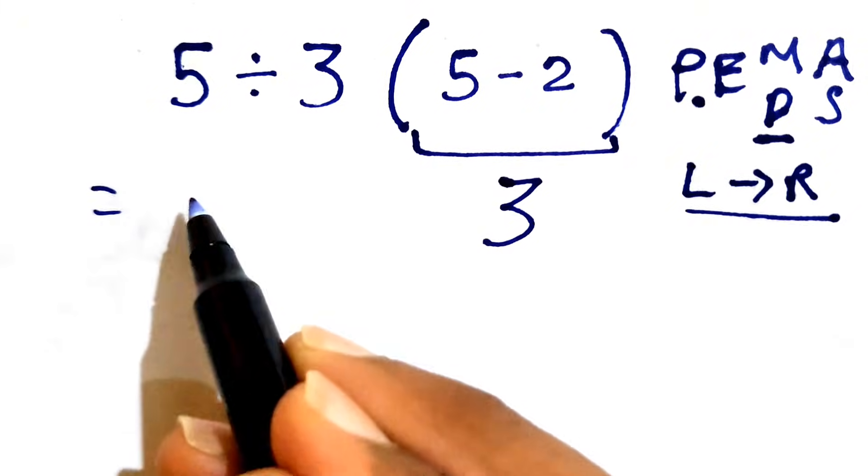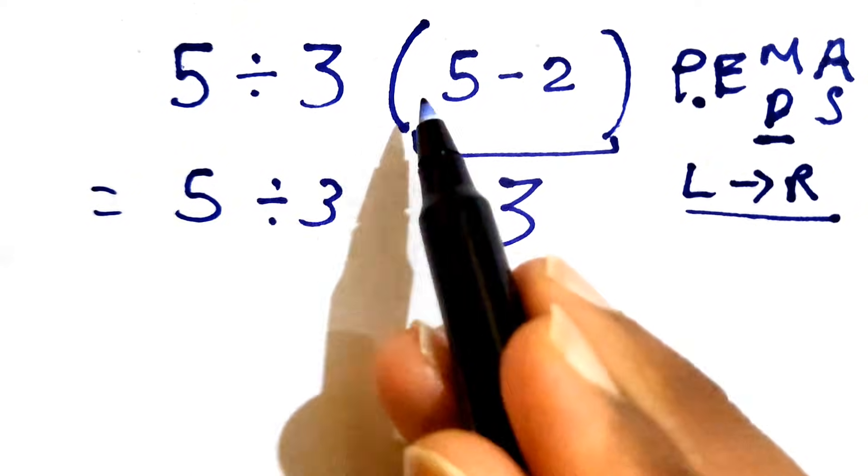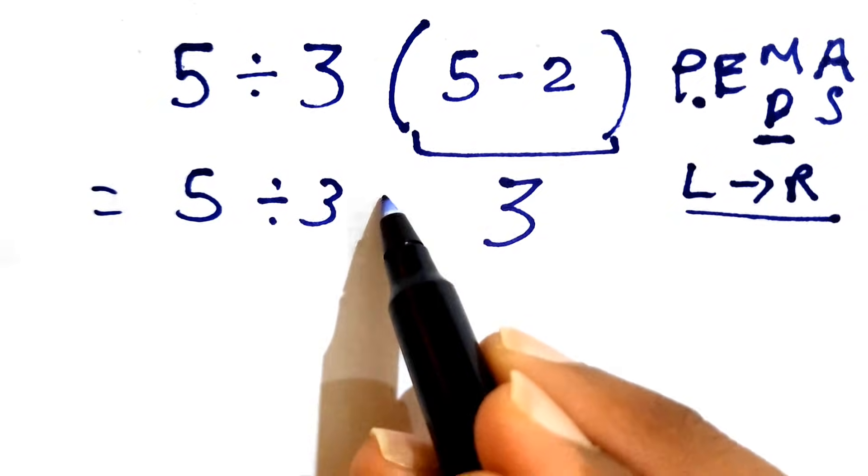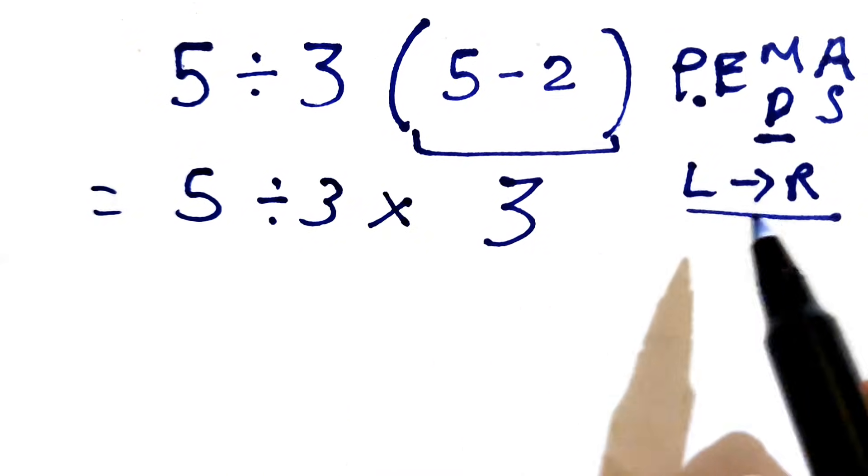We'll write 5 divided by 3, and there is multiplication because the number near the parenthesis is considered as multiplication. So we write 3 times 3. We have 5 divided by 3 times 3.